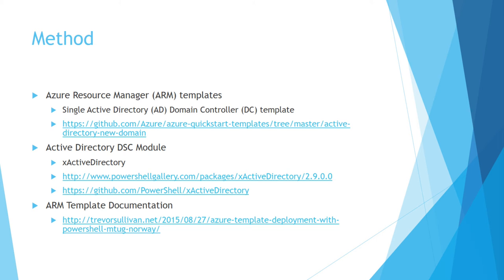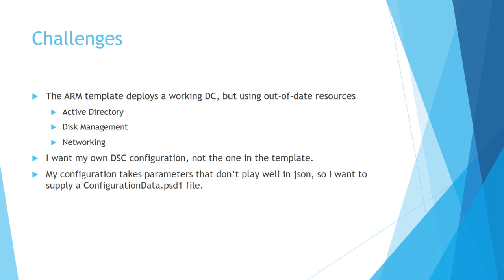I cheated like everybody else — when you write a script, you go look on the internet, find somebody else that did it, and start with that. So I went out to GitHub. There's an Azure RM section on GitHub where we've published these resource templates, and sure enough there's one there for a domain controller. I started with that, snagged the latest xActiveDirectory module from the PowerShell Gallery, and watched Trevor Sullivan's video on doing Azure template deployments with PowerShell. Then I did the phone-a-friend thing and kind of hacked this thing together.